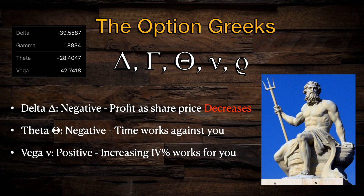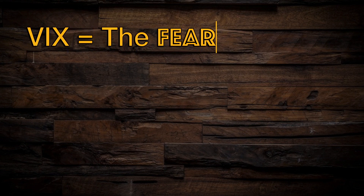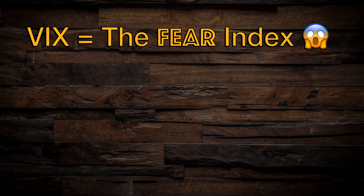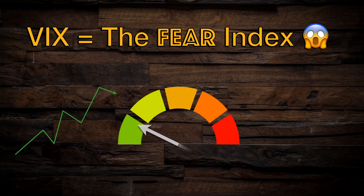I want to take a moment to hone in on the relationship between the share price of the underlying and implied volatility. The VIX, the market volatility index, is often nicknamed the fear index because volatility tends to rise dramatically as investors perceive risk and fear enters the marketplace. Often when stocks rally, volatility will actually decrease because there is less perceived risk. But when stocks suddenly move lower on bad news, volatility can spike dramatically. It is this very relationship that makes the long put such an effective strategy.